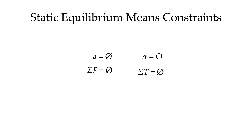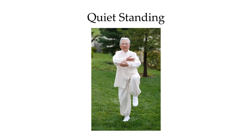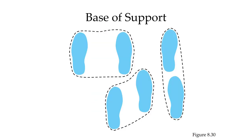Let's take a look at how we can use static equilibrium in a couple of daily activities. The first one is going to be quiet standing — we're simply going to try and stand in an erect position. Before we begin, we have to understand two fundamental concepts. The first is base of support. The base of support is going to be a perimeter that's going to be outlined by those things that are in contact with the ground.